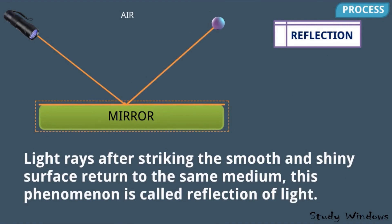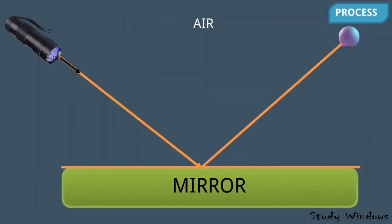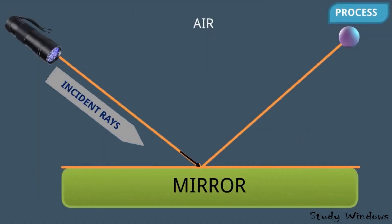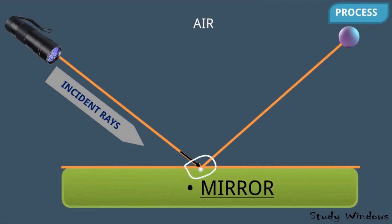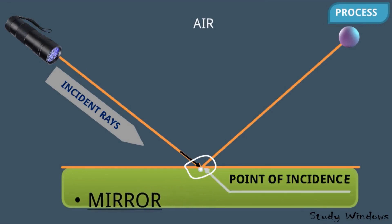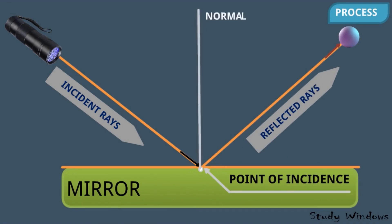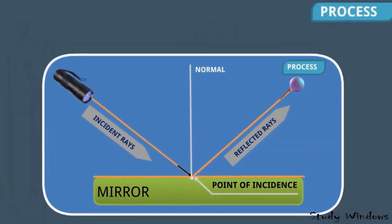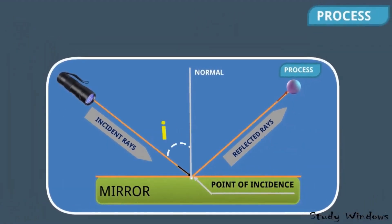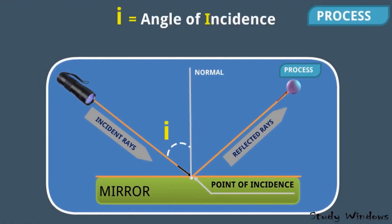Light rays, after striking a smooth and shiny surface, return to the same medium, and this phenomenon is called reflection of light. The light which falls on the mirror is known as incident rays. The point where light falls on the mirror is known as the point of incidence. The light ray which is reflected is known as reflected rays. The perpendicular drawn at the point of incidence on the mirror is known as the normal, and the angle between the incident rays and normal is known as the angle of incidence, and similarly the angle of reflection.